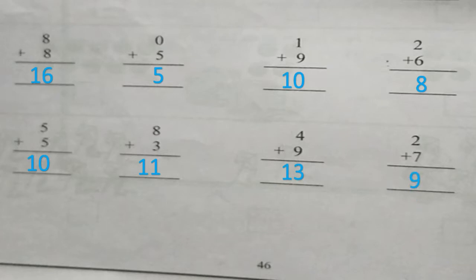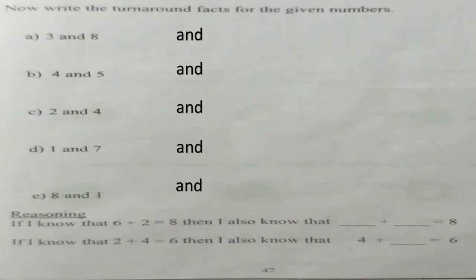Children, I hope you all have got your answers correct. We learnt about turn around facts. We have to do the same on page number forty-seven — we have to write the turn around facts for the given numbers. For question A, you have to write numbers three and eight. What will be the numbers, children? It will be eight and three.